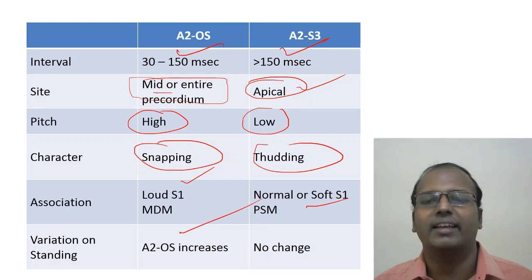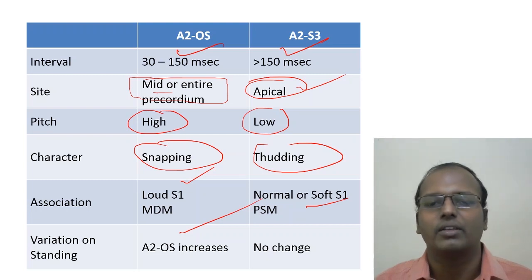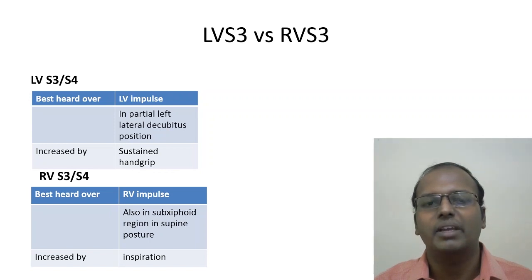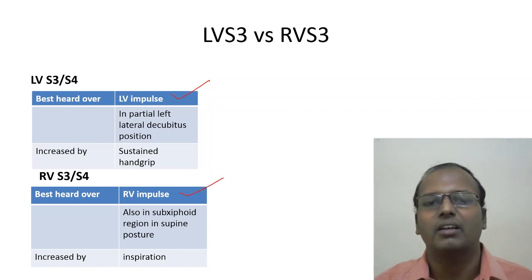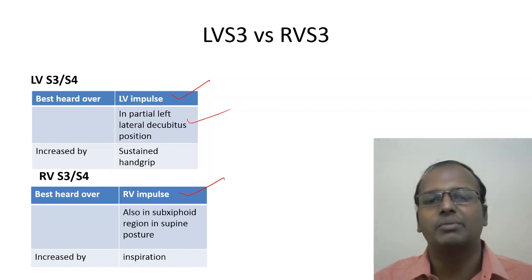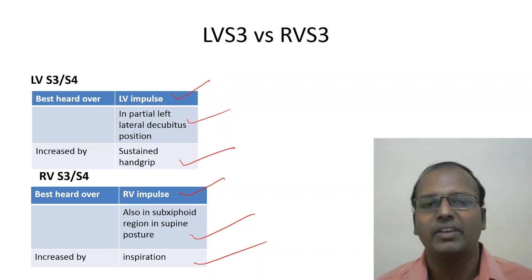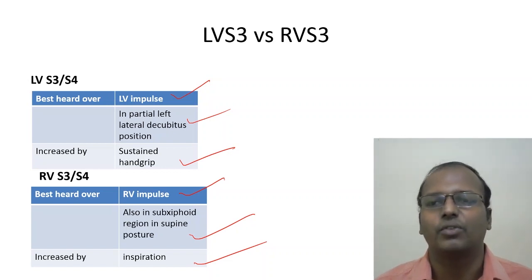To differentiate S3 from opening snap: the S2-OS interval is shorter than the S2-S3 interval. Opening snap is associated with loud S1 (mitral stenosis); S3 is associated with soft S1 or pansystolic murmur (regurgitant lesion). The A2-OS gap increases on standing; there is no change between A2 and S3. LV S3 and S4 are best heard at the LV apex in the left lateral position; RV S3 and S4 are best heard at the lower left sternal area and increase with inspiration. LV sounds increase with sustained hand grip.